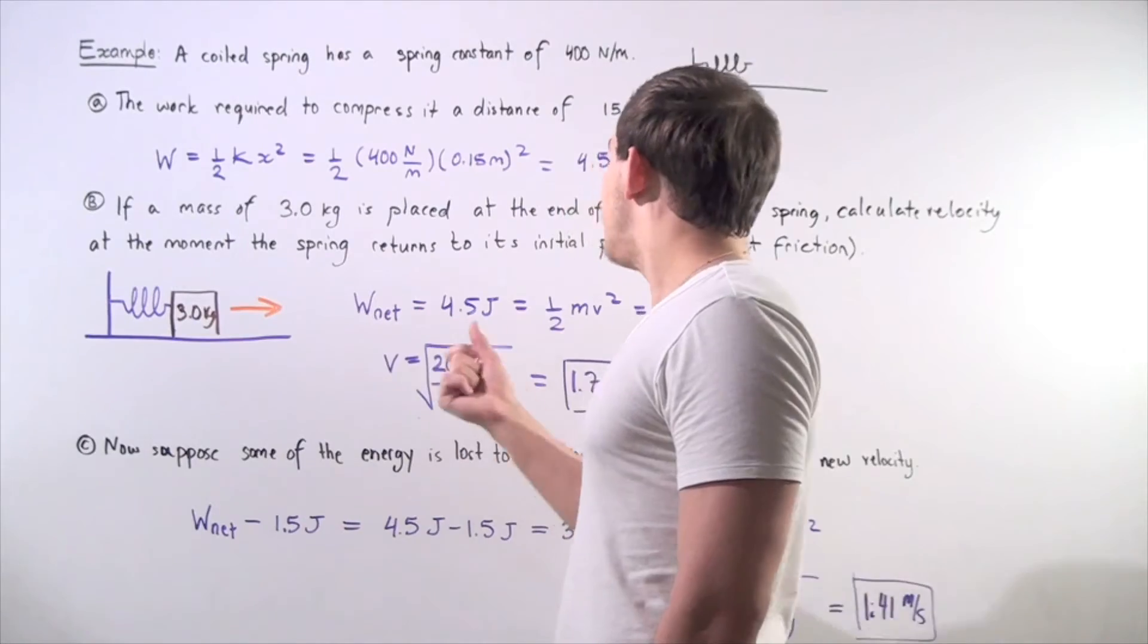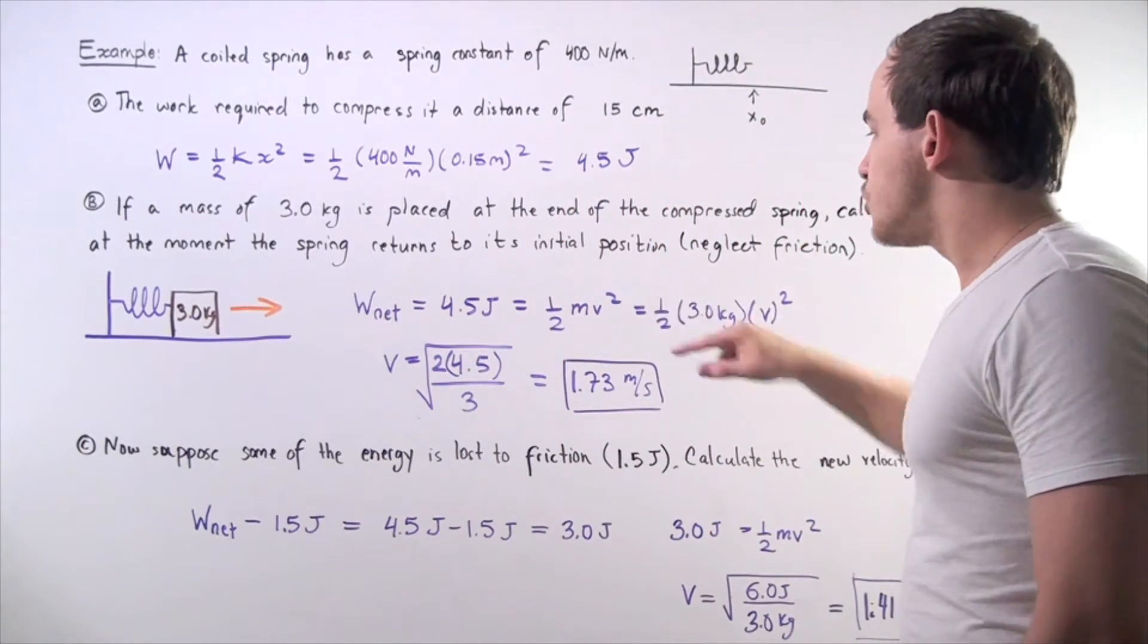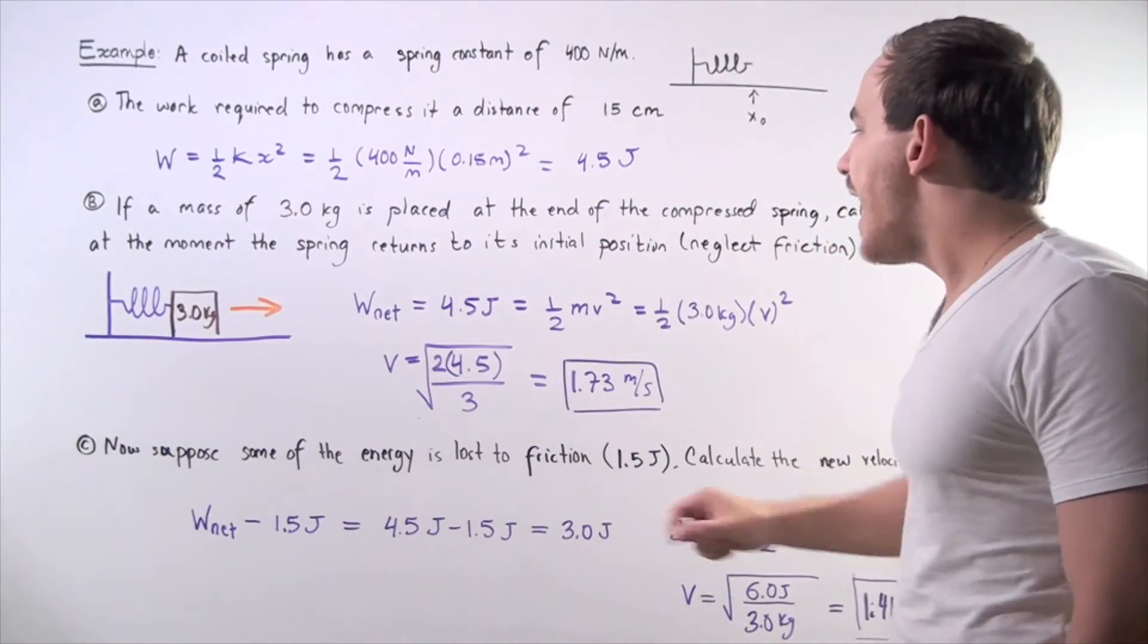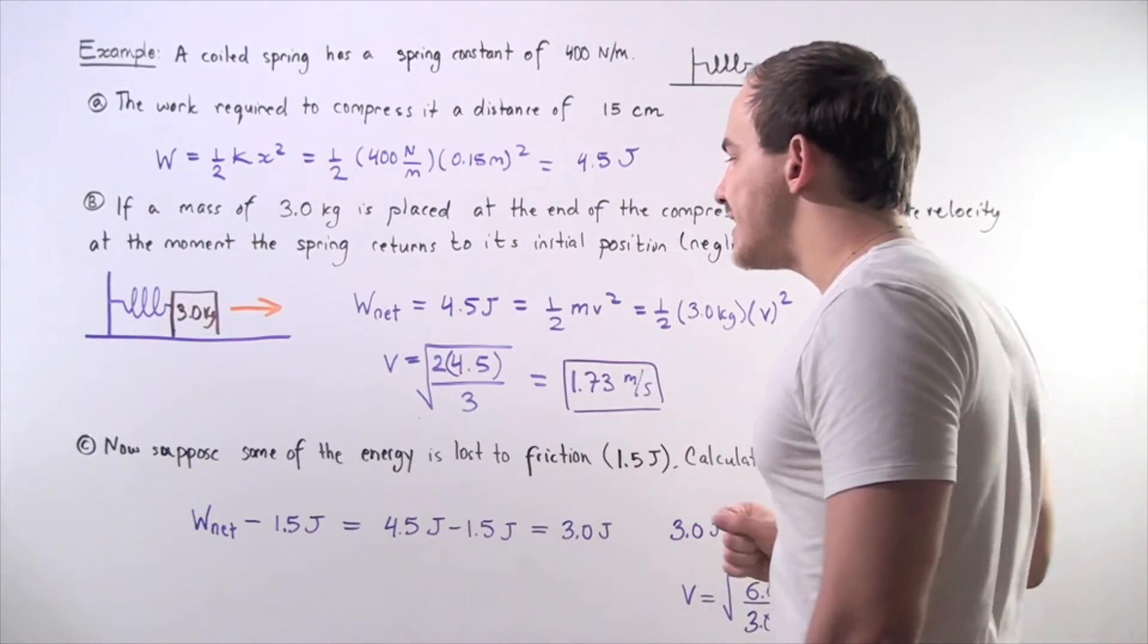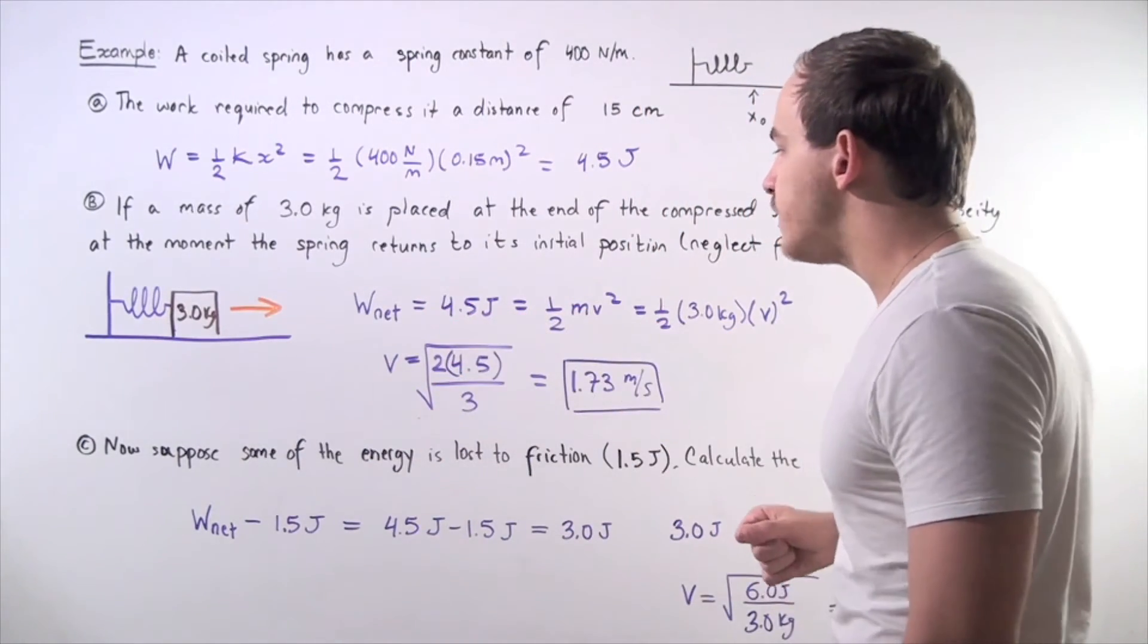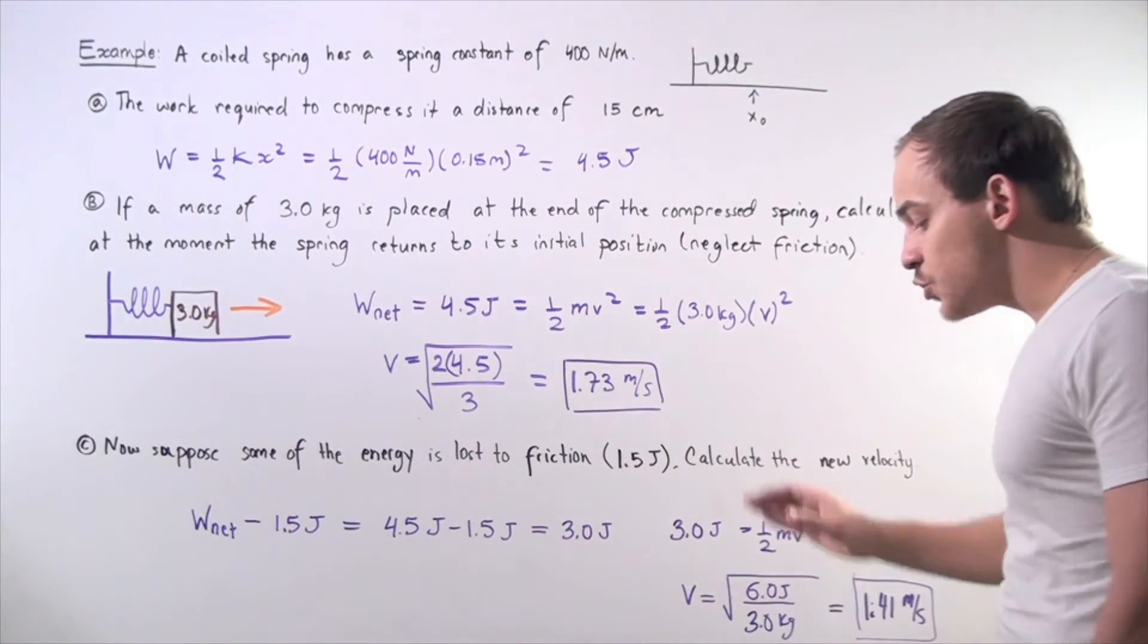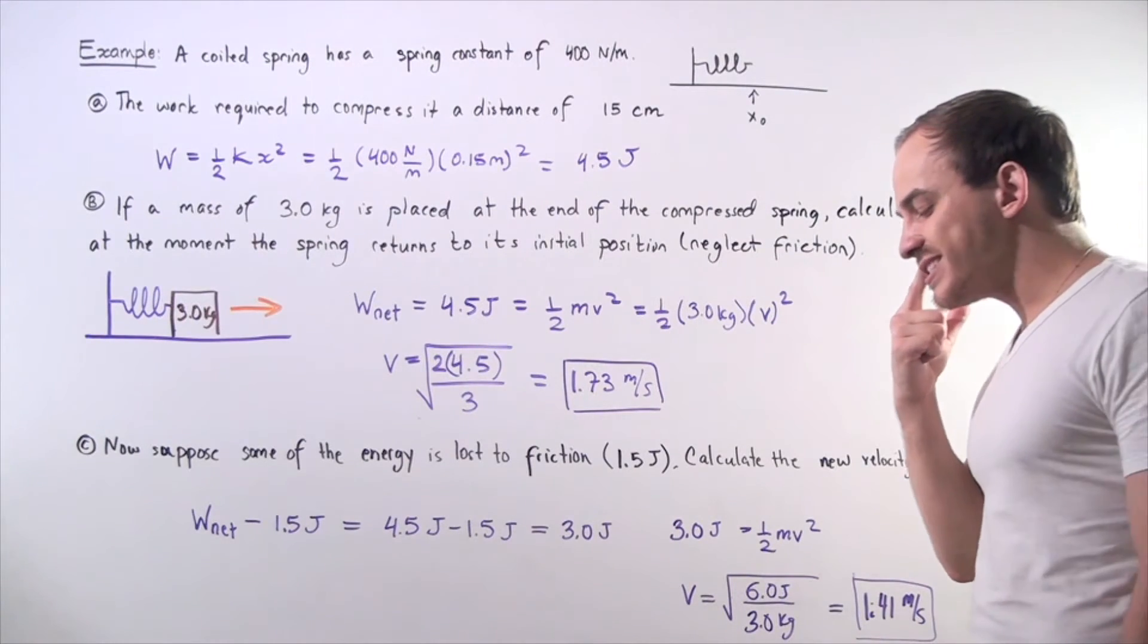All the energy that we found in part 1, 4.5 joules, is equal to one-half times mass V squared. We bring the one-half mass to this side and we take the square root of both sides. We get that our velocity is equal to the square root of 2 times 4.5, square root of 9 divided by 3, square root of 3 is equal to approximately 1.73 meters per second.